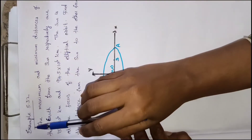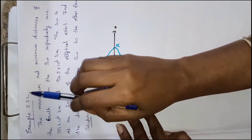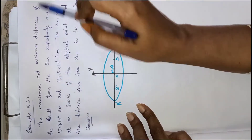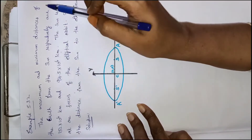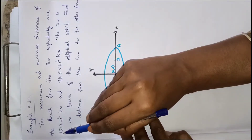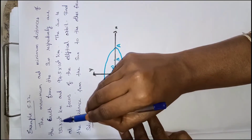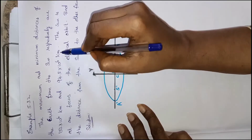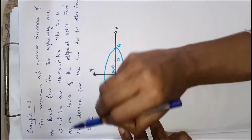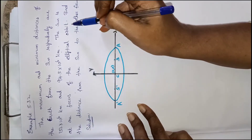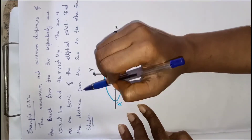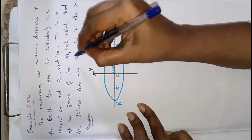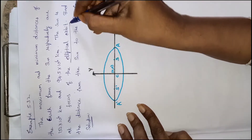Hi children, now we will see example 5.32. The maximum and minimum distance of the earth from the sun respectively are 152 into 10 power 6 kilometer and 94.5 into 10 power 6 kilometer. The sun is at one focus of the elliptical orbit. Find the distance from the sun to the other focus.